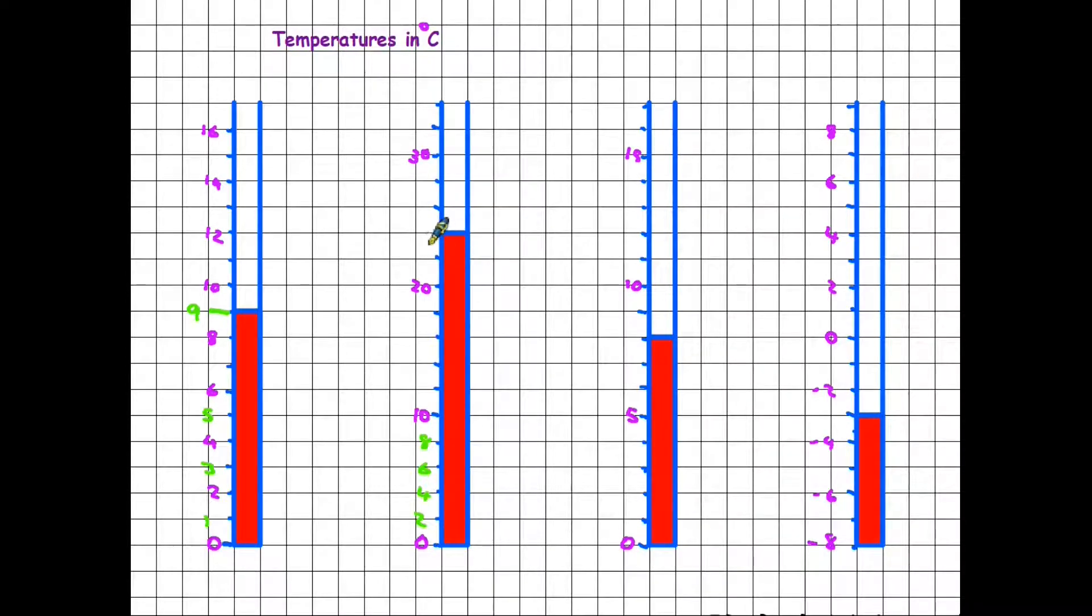So when we come to read this thermometer, which is here, we know that each small square is worth 2. So that is 20, that must be 22, therefore the temperature on this scale is 24 degrees.